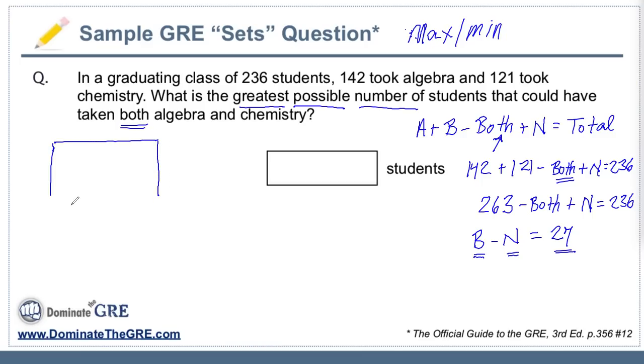How do we figure out the greatest possible number? We need to go to the extremes. That's really the secret for max-min problems - the correct answer usually lies at the extremes. If this rectangle represents the entire world of 236 students, a Venn diagram is a helpful way of showing the two different groups.